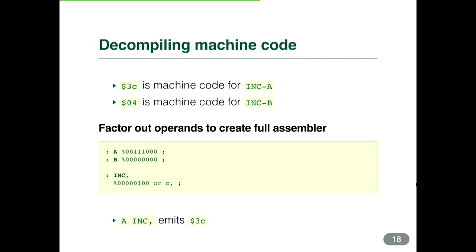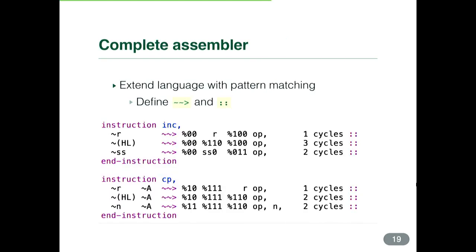We can replace all these numbers with a new Forth word that emits that number. But nicer still, we can find patterns between machine codes and abstract away the operands of an action. So 'increment' can be defined separately and combined with an 'a' register or 'b' register argument. There's no deep meaning to the binary values — it's just that combining these numbers in this way produces an increment-A or increment-B. You write 'a increment' and it emits the correct opcode to the ROM.